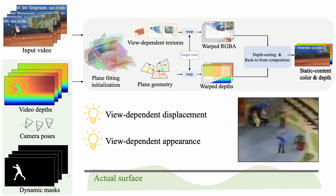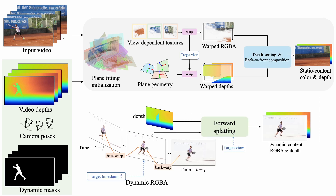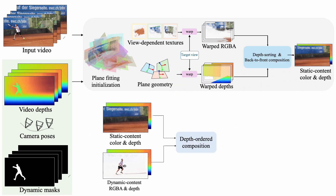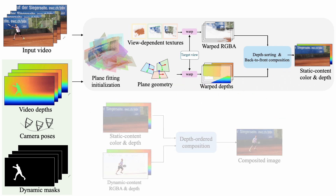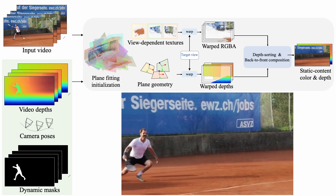Here's the comparison between before and after the view-dependent modeling. We model dynamic contents as per-frame 3D point clouds and render them via forward splatting. Given a target viewpoint and time, we render the static and dynamic contents and compose them to form our final image.